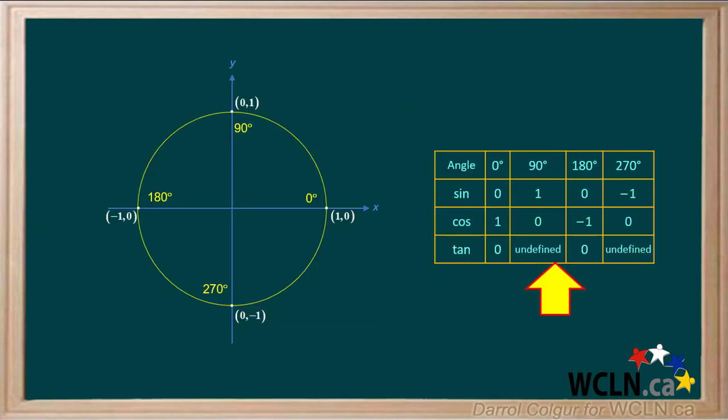Exact values of trig functions for 0 degrees, 90 degrees, 180 degrees, and 270 degrees can be obtained using the unit circle, as shown here. These can be determined using the x and y coordinates and knowing that the radius of the circle is 1.